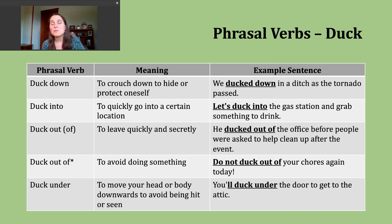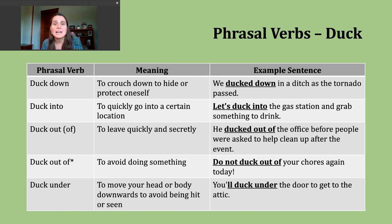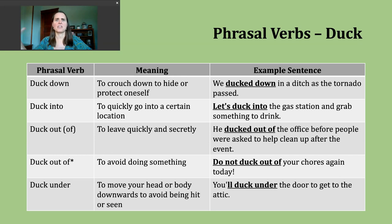Depending on where you live, maybe you've seen or encountered a tornado — it's a particular type of storm with high winds that can be extraordinarily dangerous, even deadly. One way some people protect themselves if they happen to be outside is to get into a very low spot, because tall things can kind of attract it.